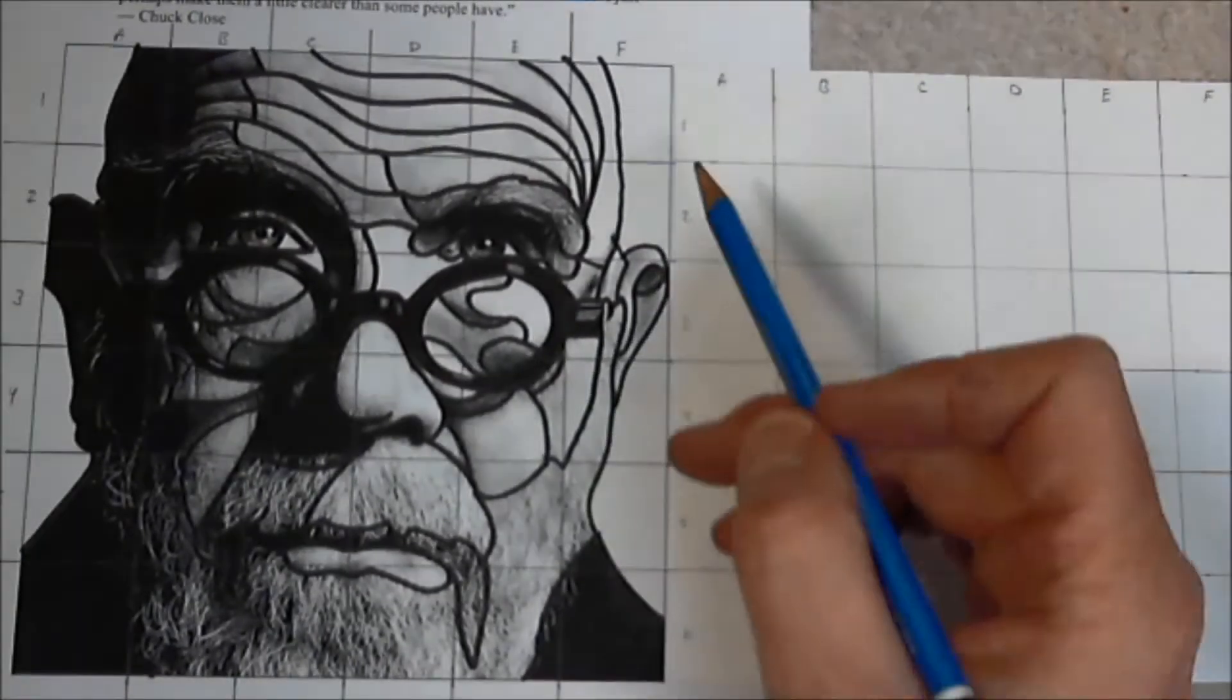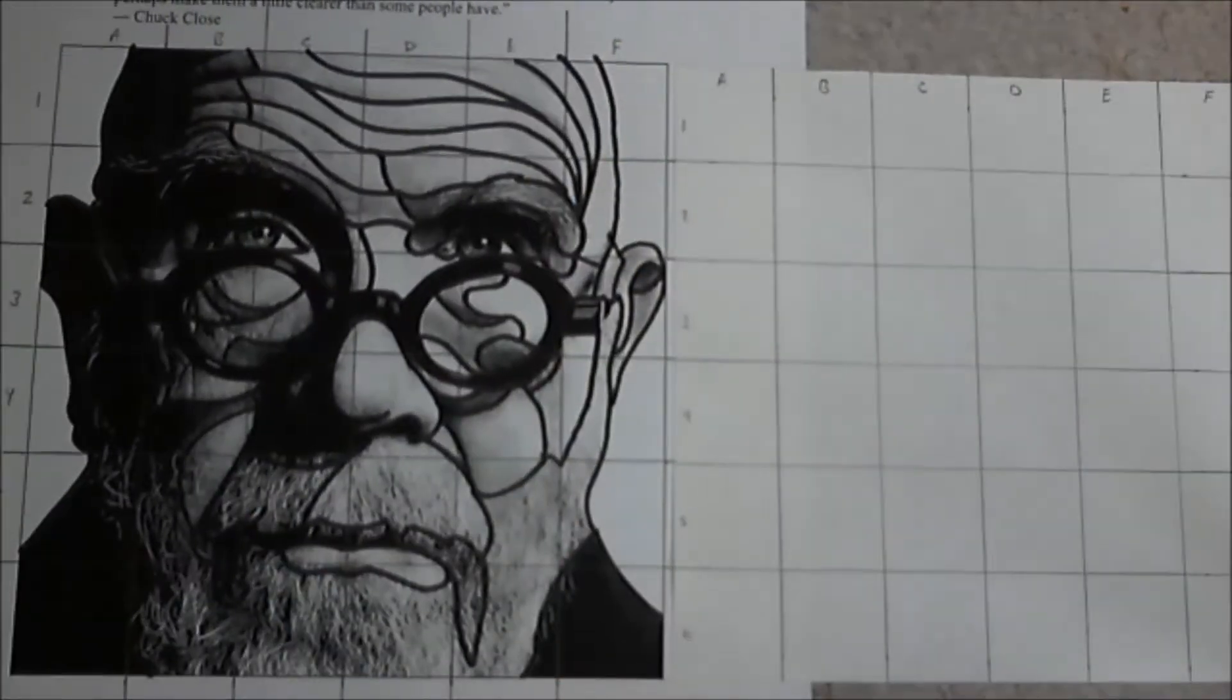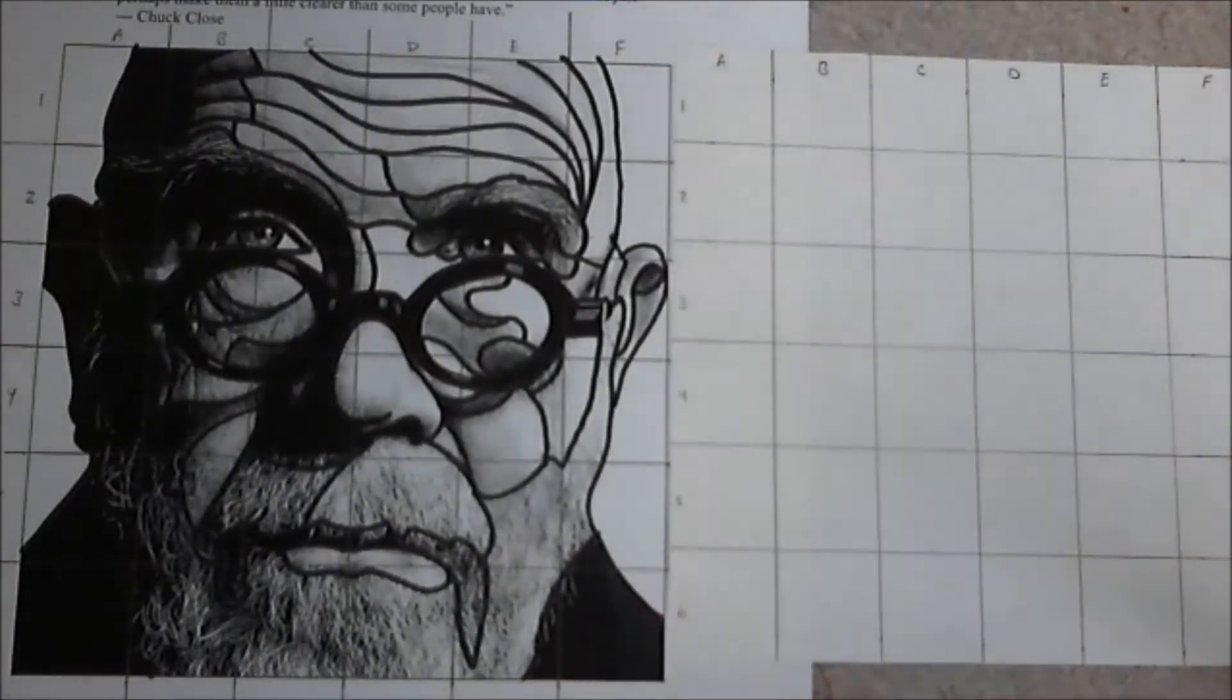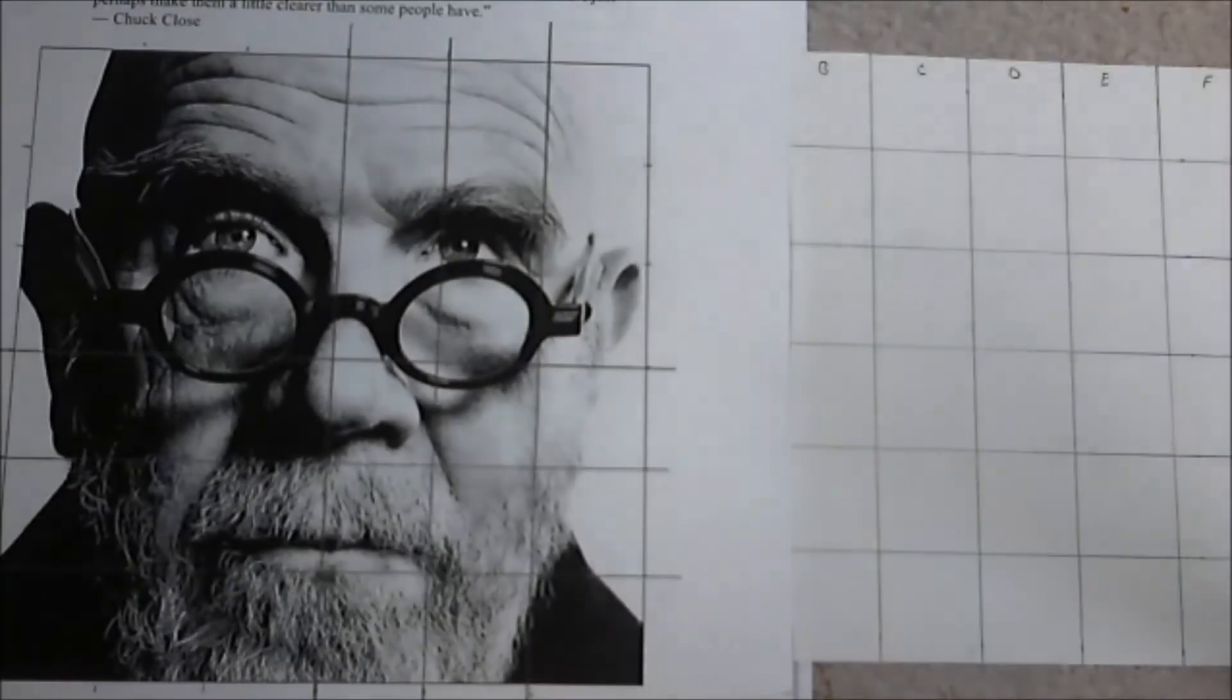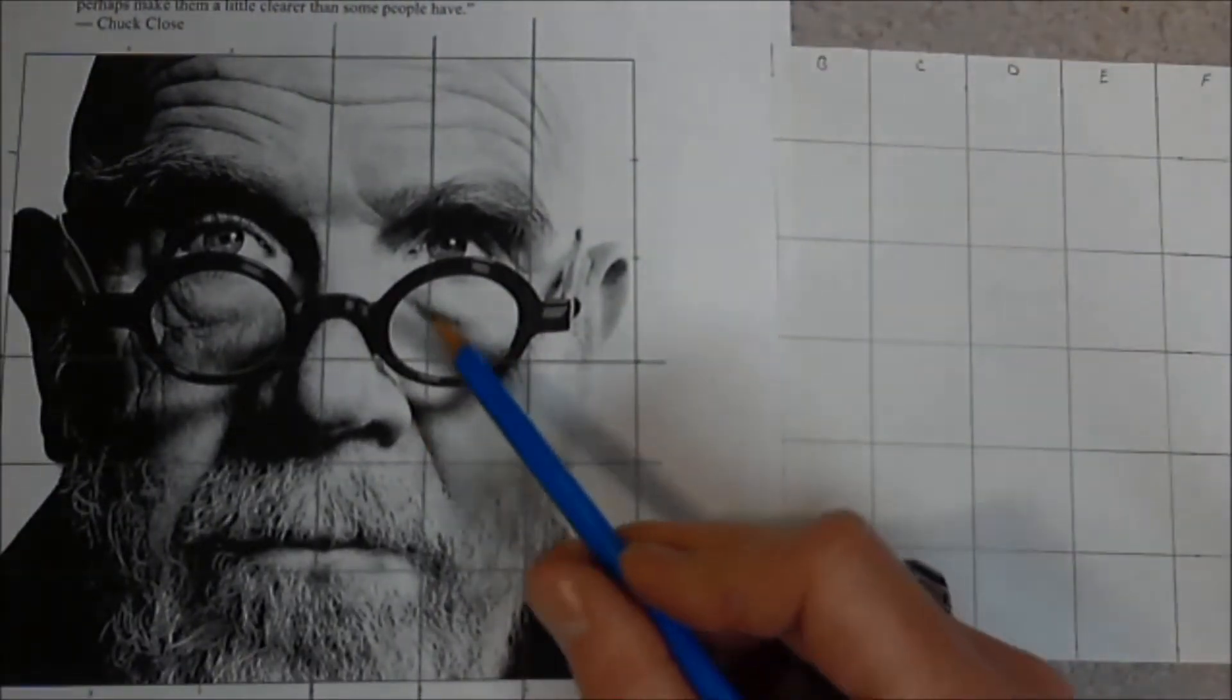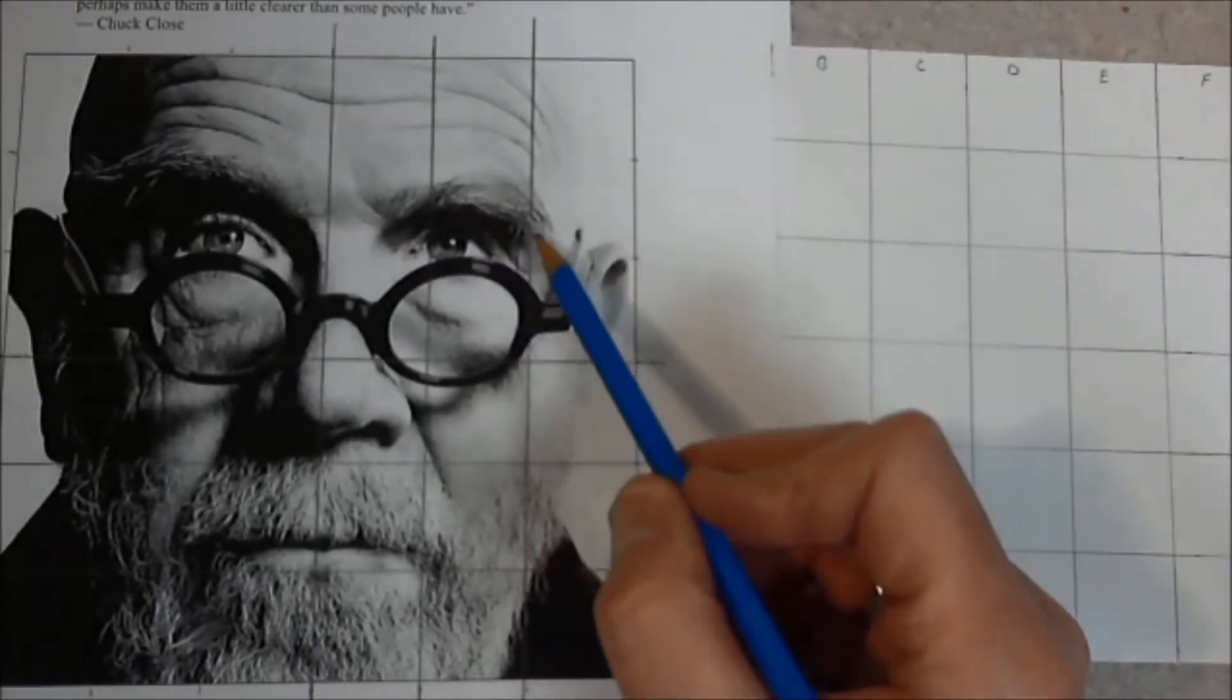Now this does not mean that you have to draw lines around shapes to help define it. You can simply look at things like Mr. Close's face and deal with the values, the soft shadows and the values that are in there. And that's one way to do it.